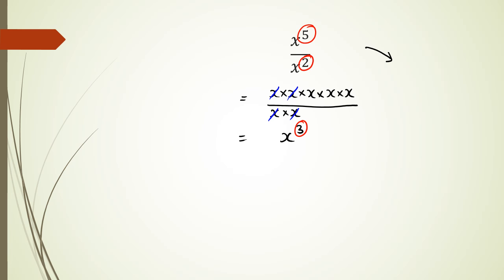So the shorter way of doing x to the power of 5 over x squared would be to write it as x to the power of 5 minus 2, which equals x to the power of 3.